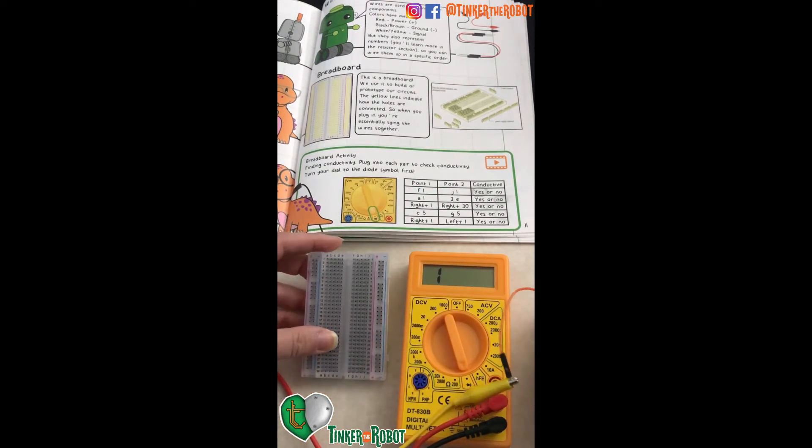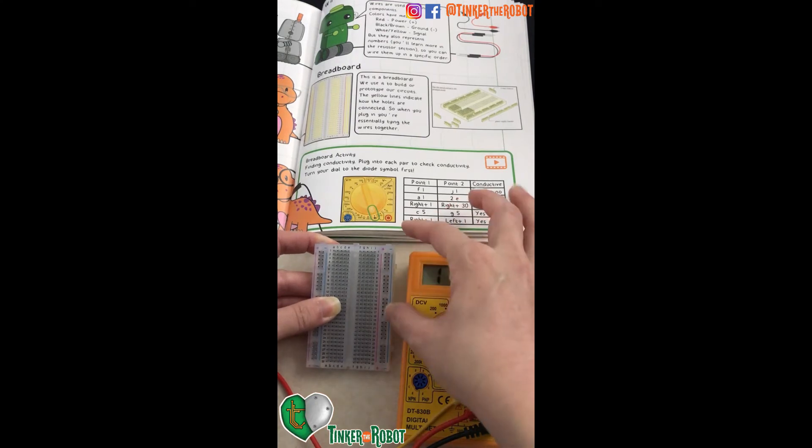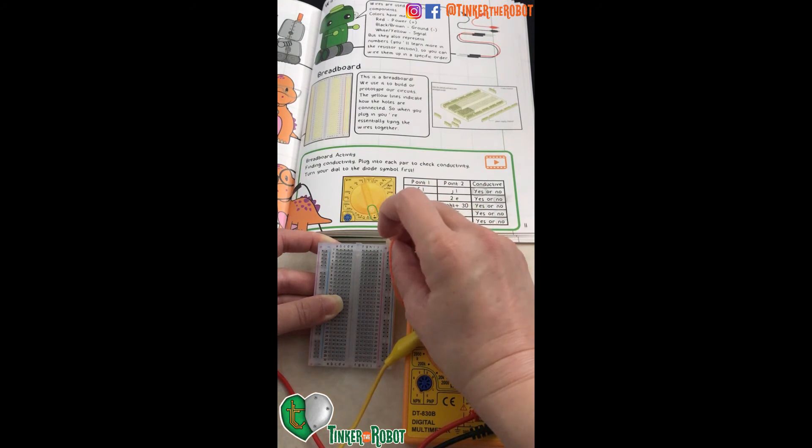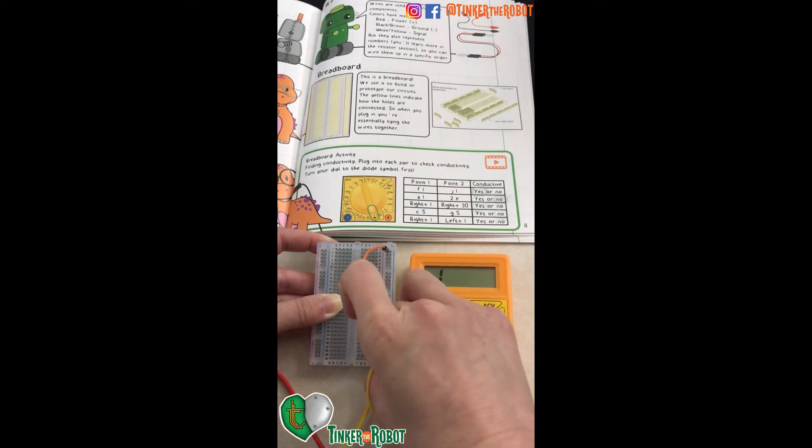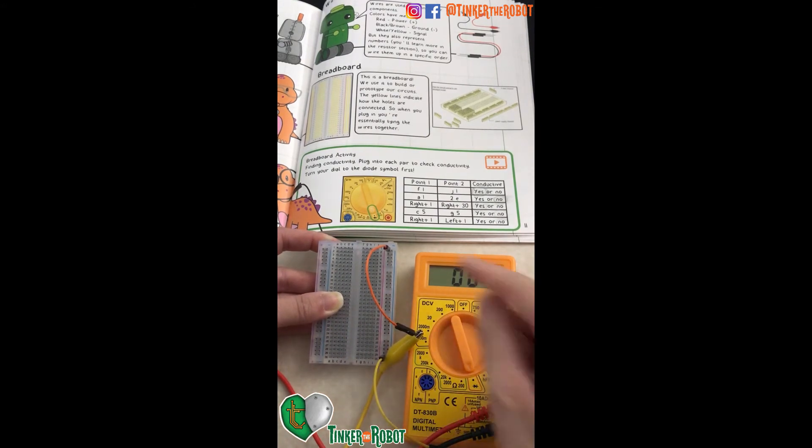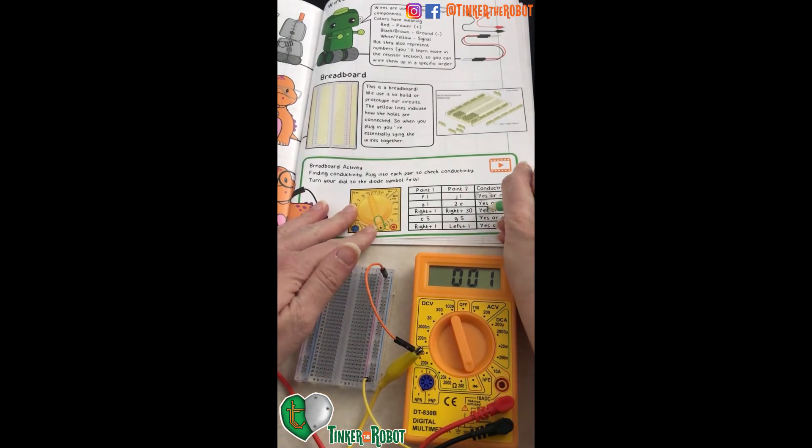Next is right positive 1 and right positive 30. So here is our right positive column. Right positive 1 is this first one right here and right positive 30 is the last one right here. And you see that it is conductive, and so that means this column is all connected. Come and say yes.